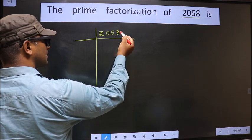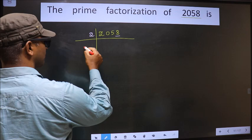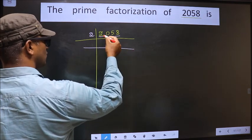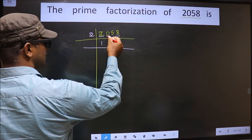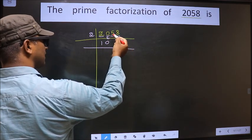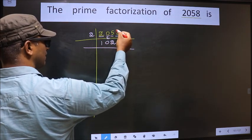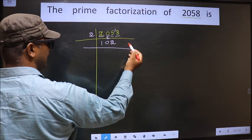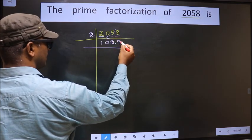For this number, the last digit is 8, which is even, so we take 2 here. The first number is 2. When do we get 2 in the 2 table? 2 ones 2, 0 as it is. The next number 5, a number close to 5 in the 2 table is 2 twos 4. 5 minus 4 is 1, 1 carried forward making it 18. When do we get 18 in the 2 table? 2 nines 18.